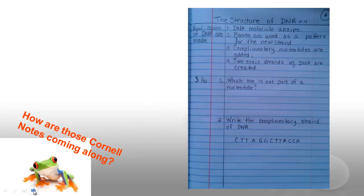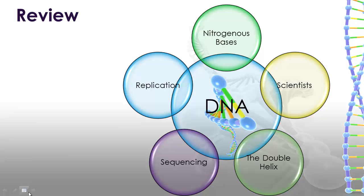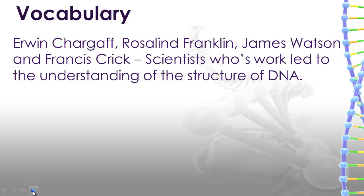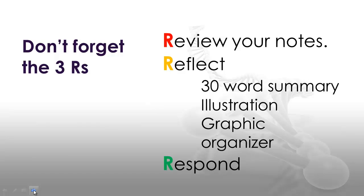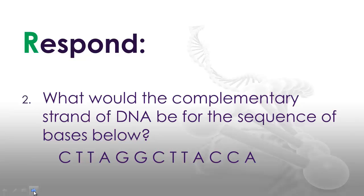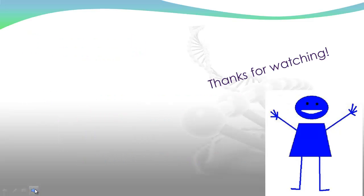Take a second to check your Cornell notes and make sure you've got them up to date. To review, in this video you found out about nitrogenous bases and the scientists who worked on the structure of DNA. You know about the double helix, how to sequence DNA, and how DNA replicates. Make sure you have these vocabulary words in your notes and information about the four scientists. Don't forget your three R's: review your notes, reflect on each page with a 30-word summary, an illustration, or a graphic organizer, and respond to these two questions — which of the following is not part of a nucleotide, and what would the complementary strand of DNA be for the sequences below? Thanks for watching.